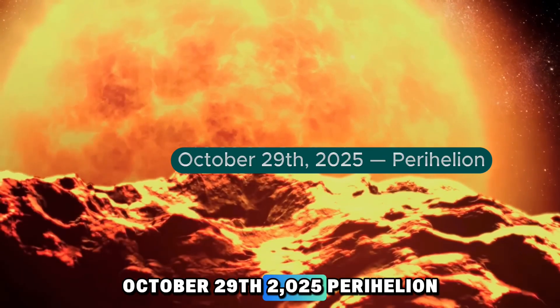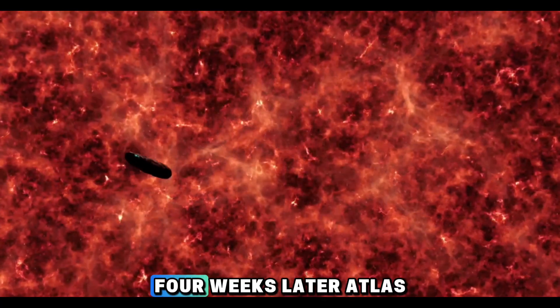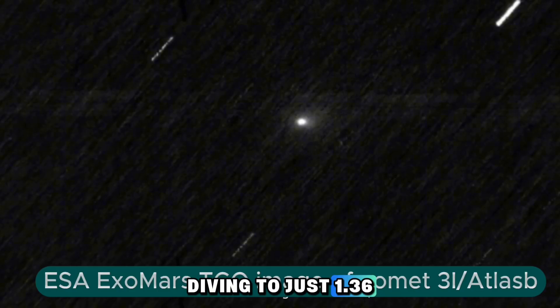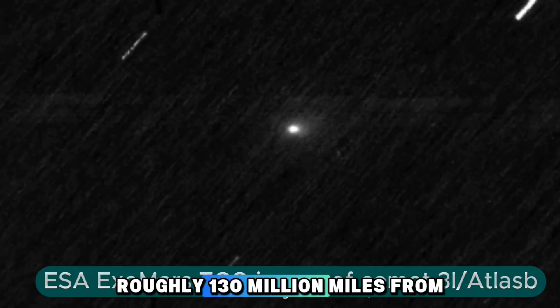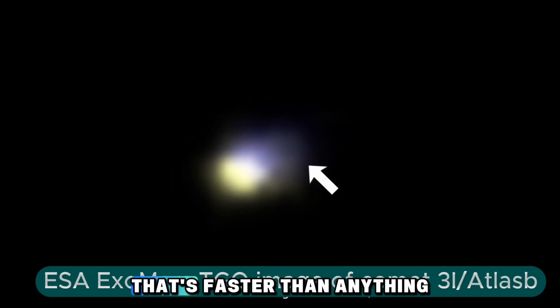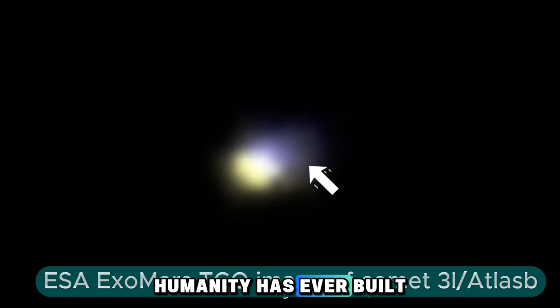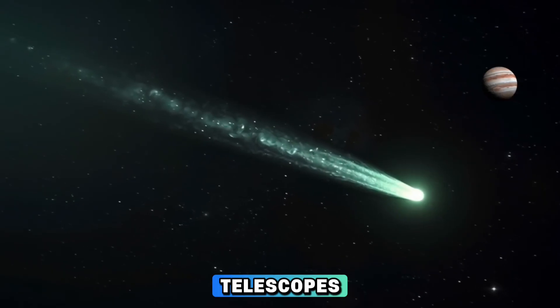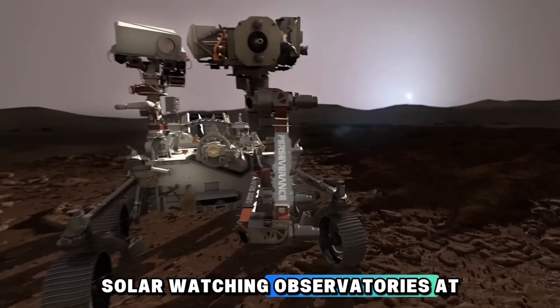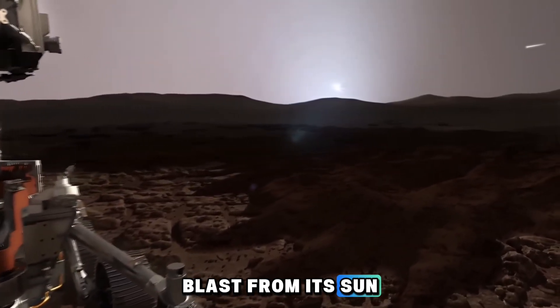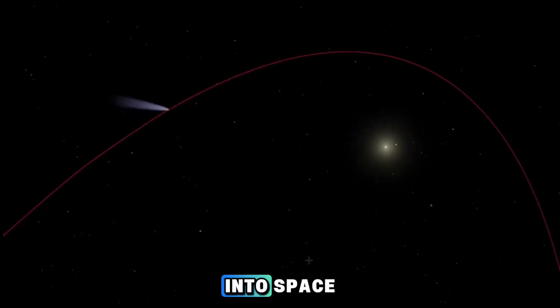October 29th, 2025. Perihelion. Four weeks later, Atlas will swing behind the Sun, diving to just 1.36 astronomical units, roughly 130 million miles from our star's surface. At that moment, its speed will surge past 152,000 miles per hour. That's faster than anything humanity has ever built. It'll vanish behind the blinding solar glare, invisible to Earth-based telescopes, but not to those on Mars or the solar-watching observatories at L1. There, instruments will keep tracking as jets of vapor blast from its sun-heated crust, spraying dust and plasma into space.